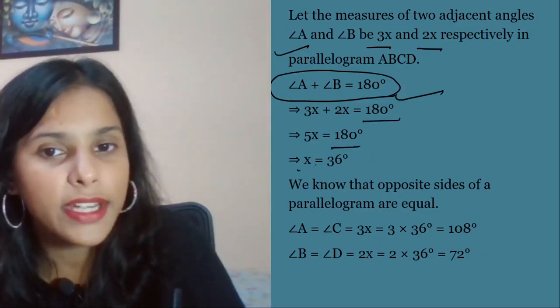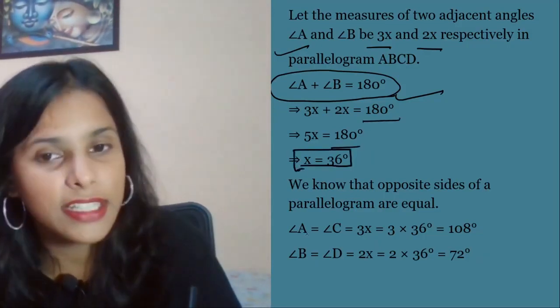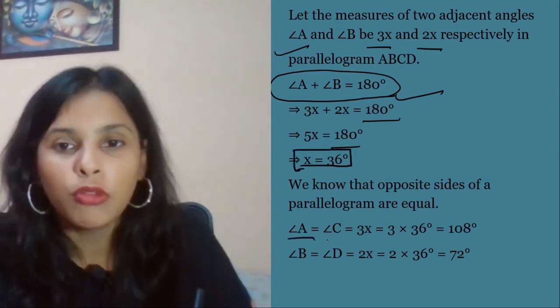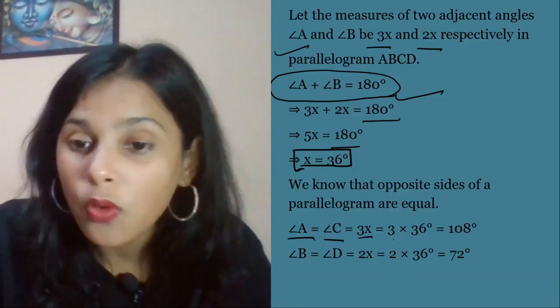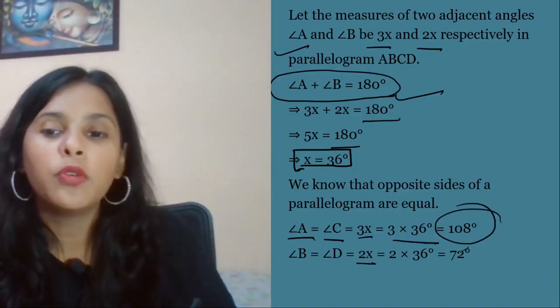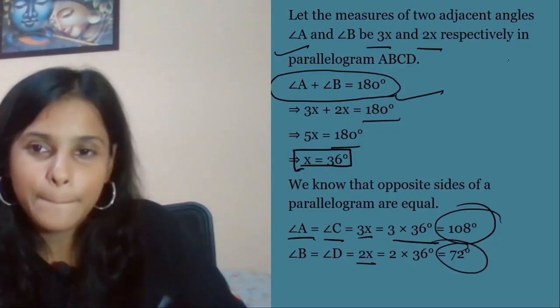All adjacent angles sum to 180. So 3x plus 2x equals 180, so 5x equals 180, and x value is 36 degrees. Now a equals 3 times 36, which is 108 degrees, and 2x equals 72 degrees. Done.